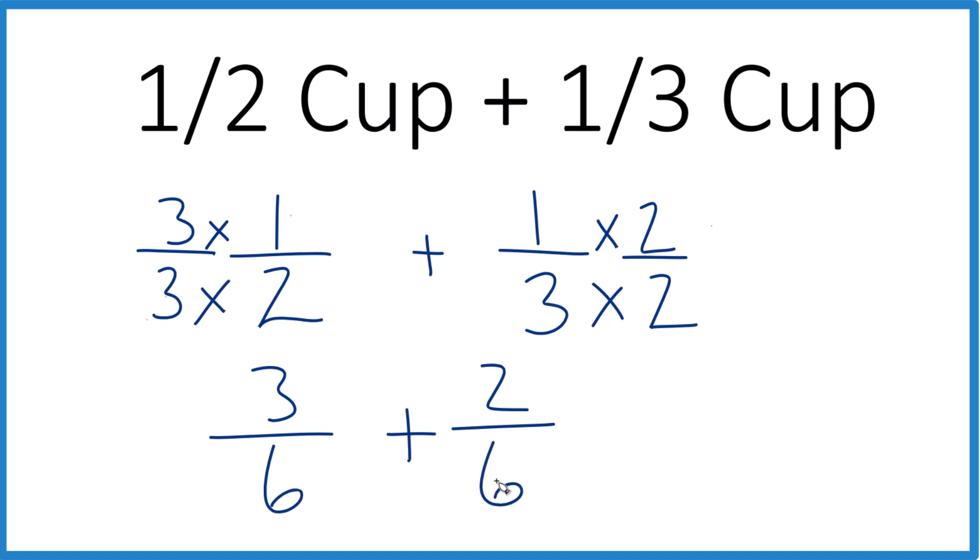And you can see now the denominator, it's the same. So we just keep that the same, and then we add the numerators. 3 plus 2 is 5. And 1/2 cup plus 1/3 cup is 5/6 of a cup. That's how you do it.